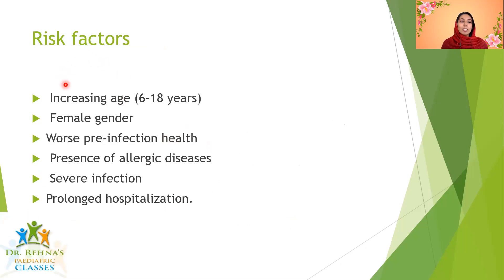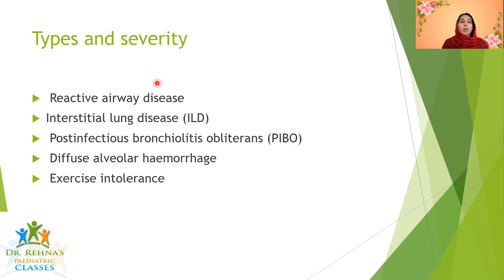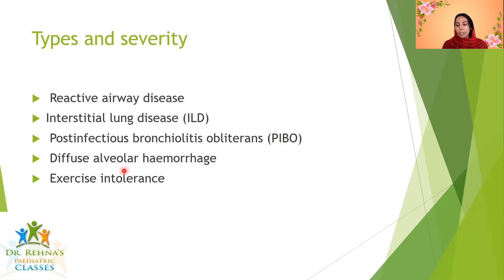What are the risk factors? As of now, they include increasing age of 6 to 18 years, female gender, worse pre-infection health (meaning children with chronic disorders before COVID infection), presence of allergic diseases, severe infection, and prolonged hospitalization. These are the known risk factors for long COVID in children. They can present with reactive airway disease, interstitial lung disease, post-infective bronchiolitis obliterans, diffuse alveolar hemorrhage, exercise intolerance, etc.